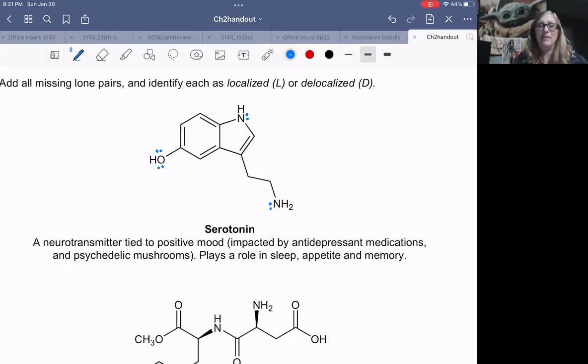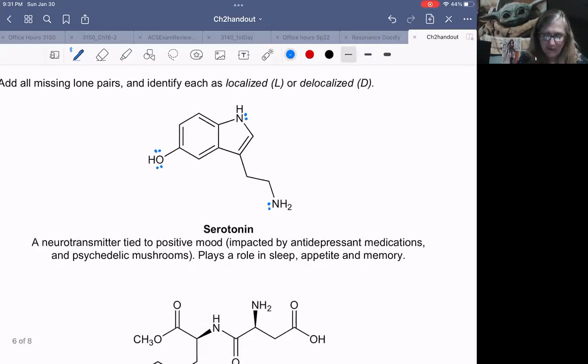Let's add any missing lone pairs. Any oxygen or nitrogen would have lone pairs. This oxygen would have two lone pairs. This nitrogen would have a lone pair and this nitrogen would have a lone pair. Now how can I decide if it is localized or delocalized? If it is allylic, if it is next to a pi bond. Here we have a pi bond and the lone pair is not on the pi bond. It's the next atom over. That is an allylic lone pair.